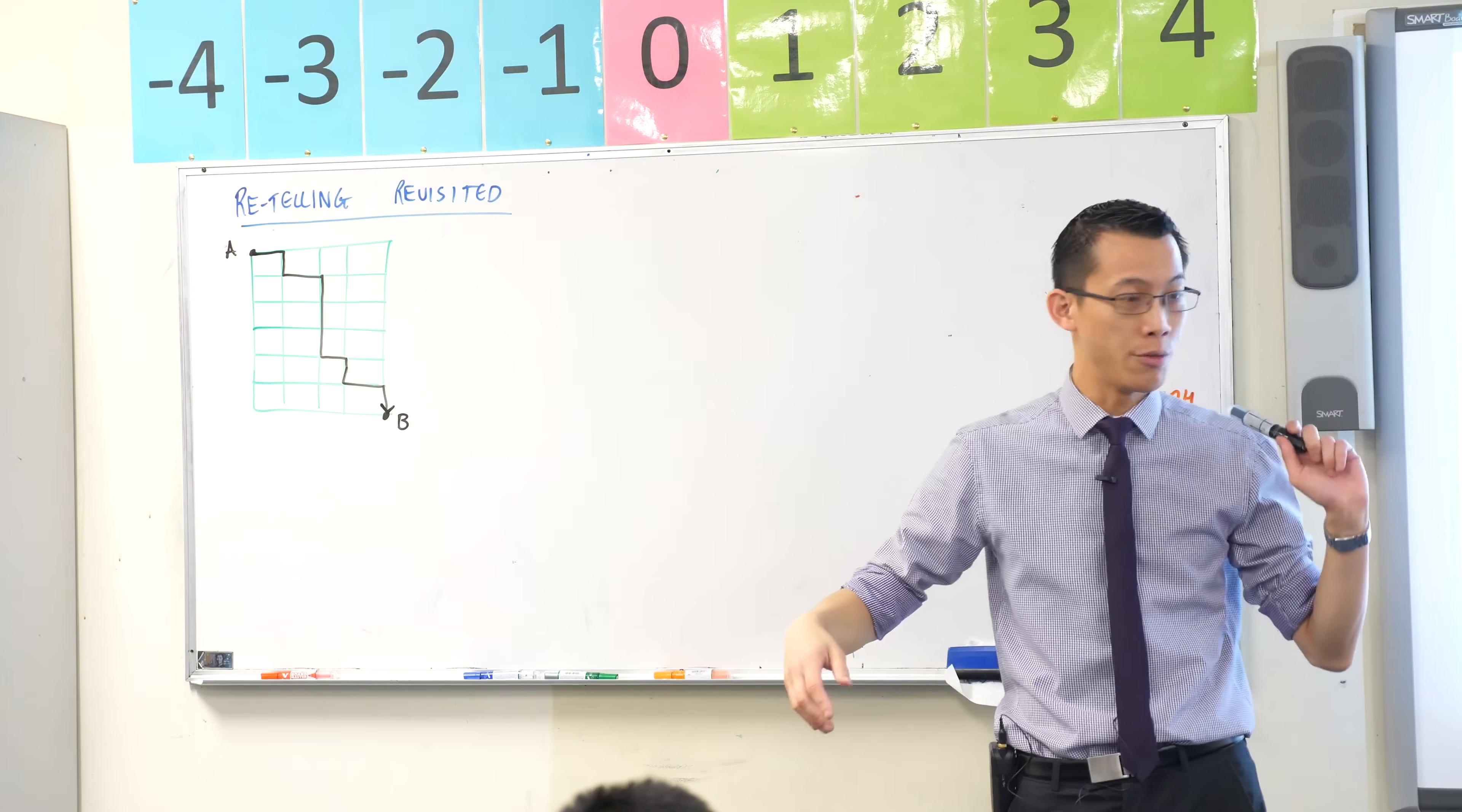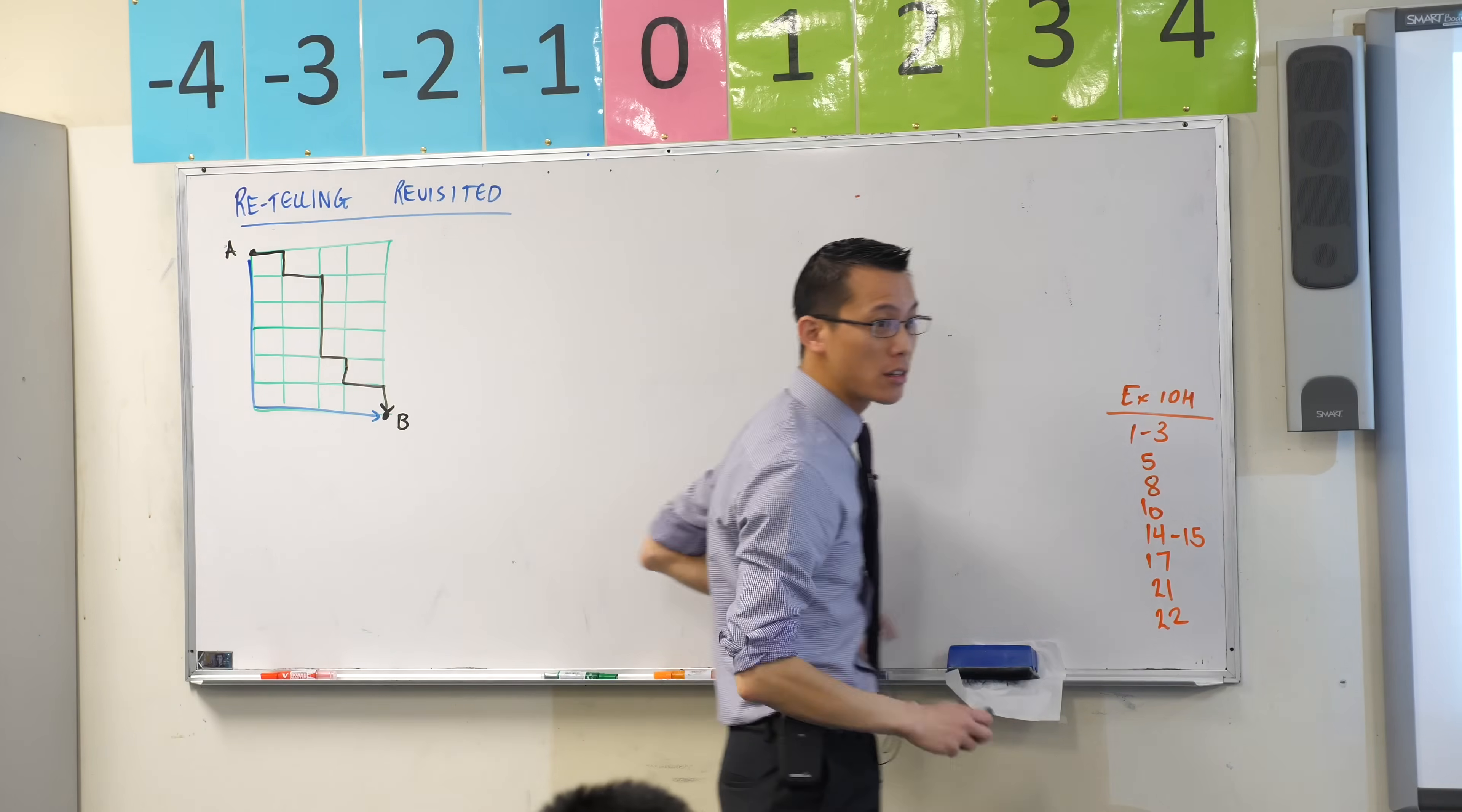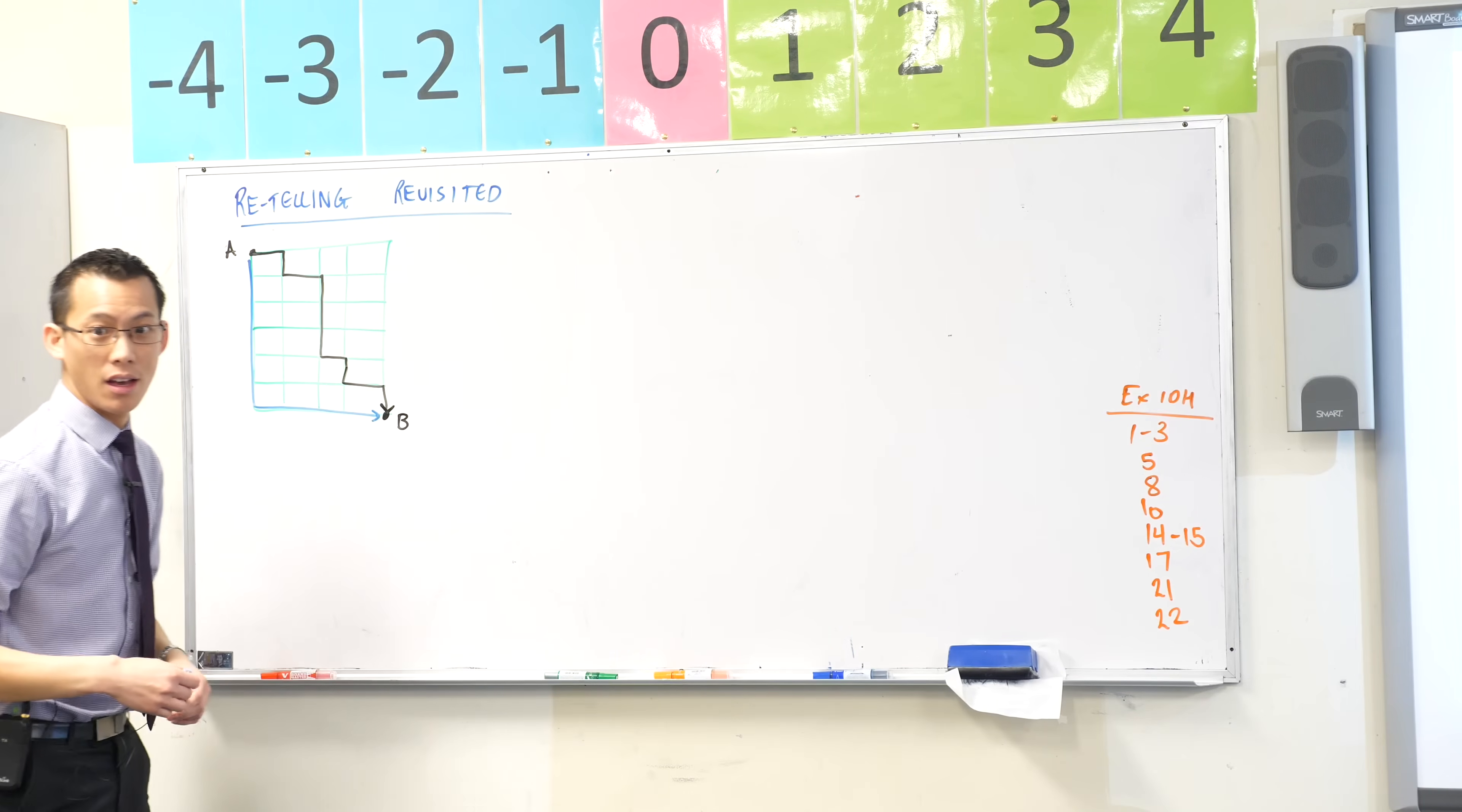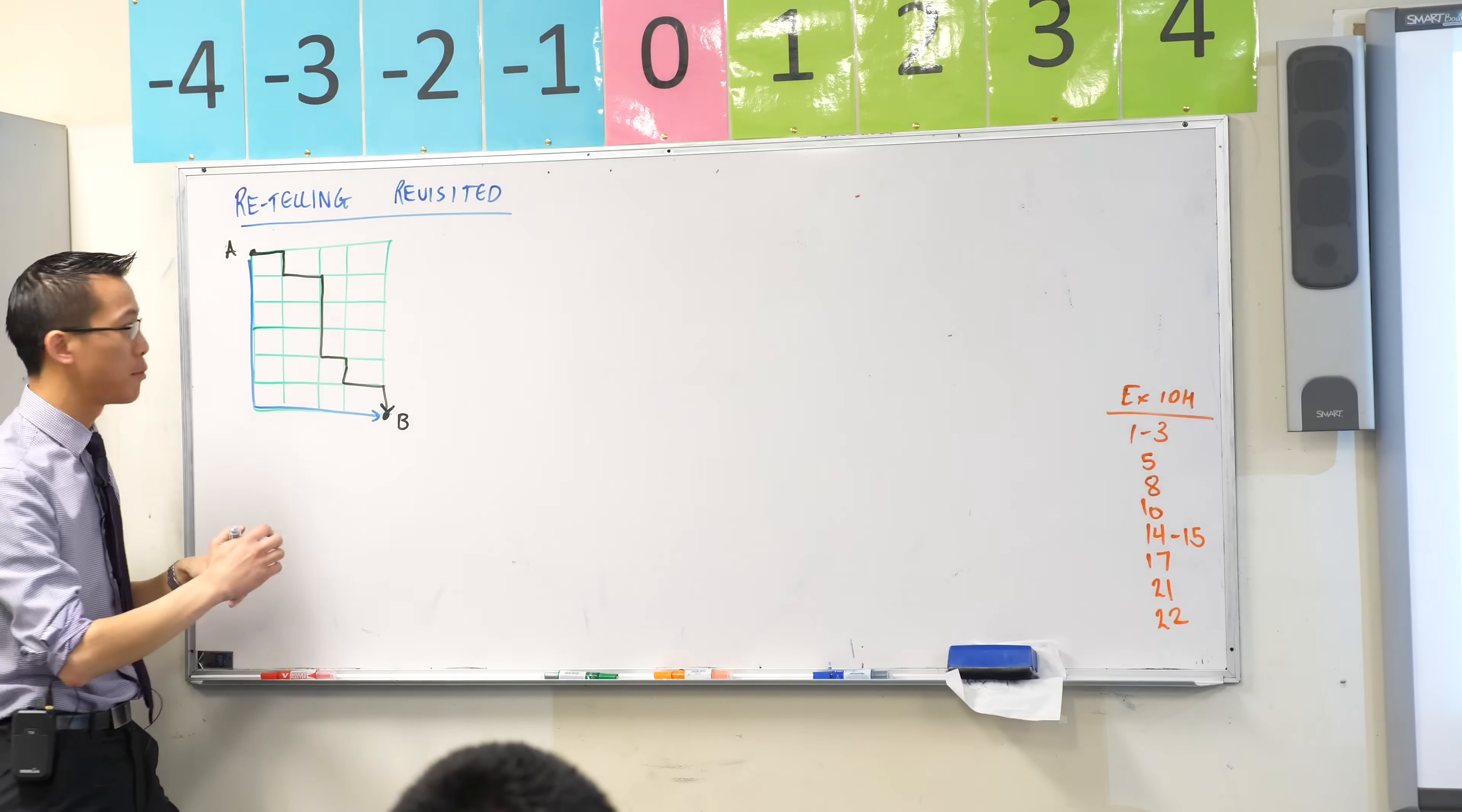Now how would you tell someone, if you see this, you all can see this now, but you want to communicate to someone outside the room this particular path as opposed to, for instance, say this path. These are two different paths. They arrive at the same spot, but how would you describe them to someone? What language would you use? Say the black one, how would you describe that one? You can't just tell them go from A to B because either black or blue would do that. Can someone tell me how would you describe black to distinguish it from blue?